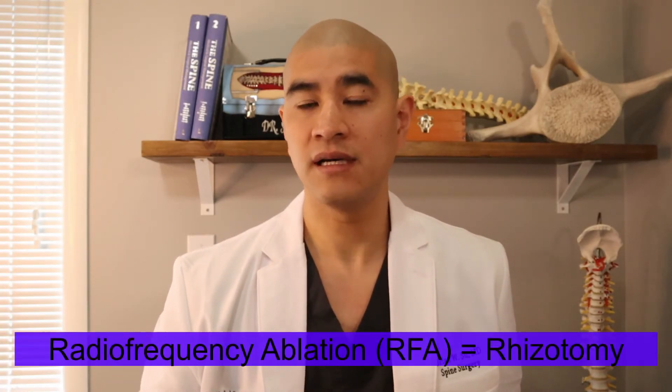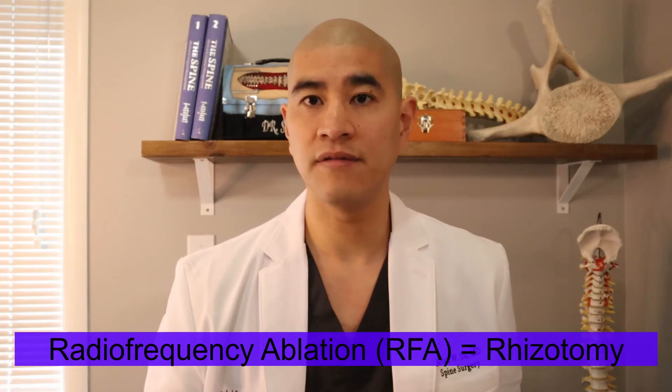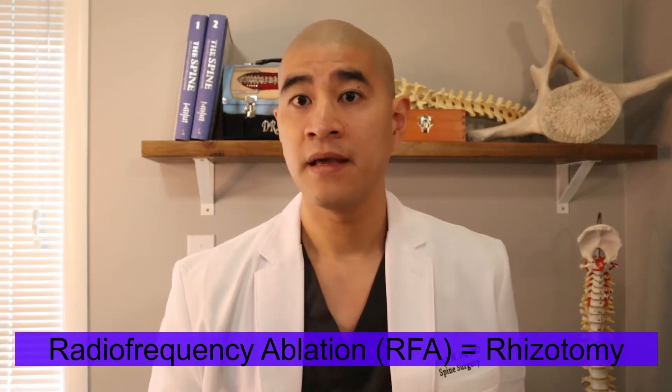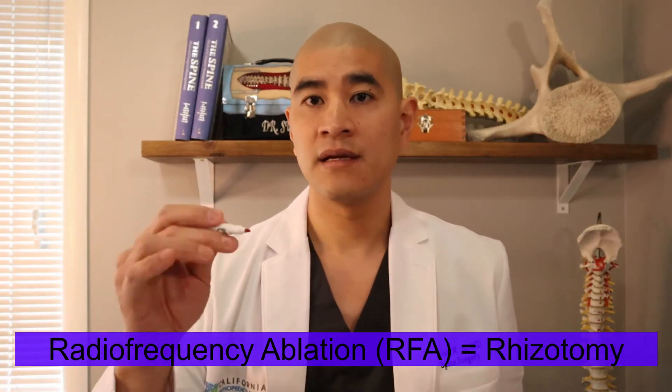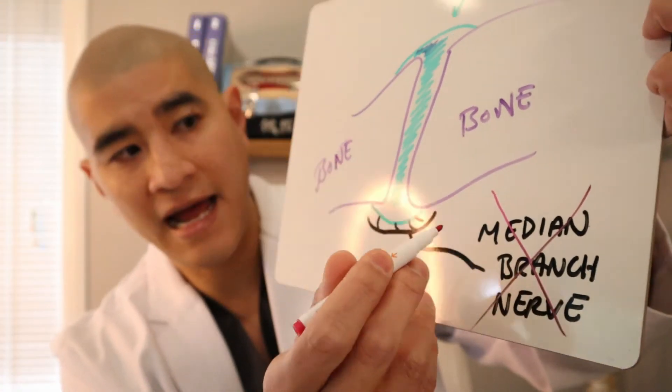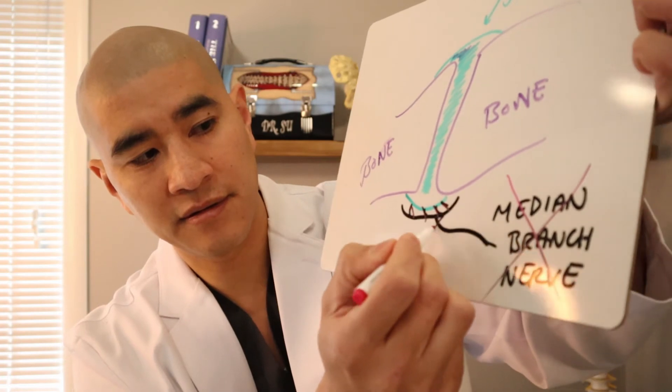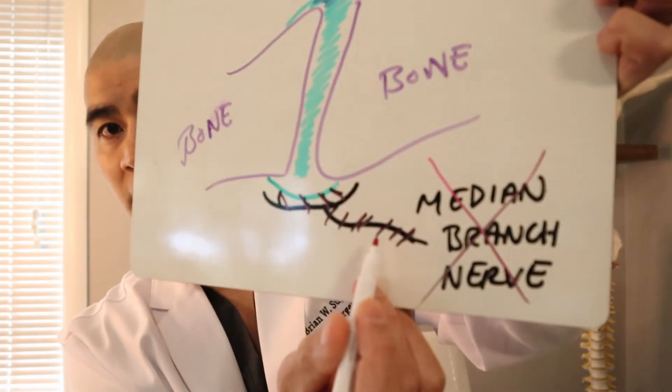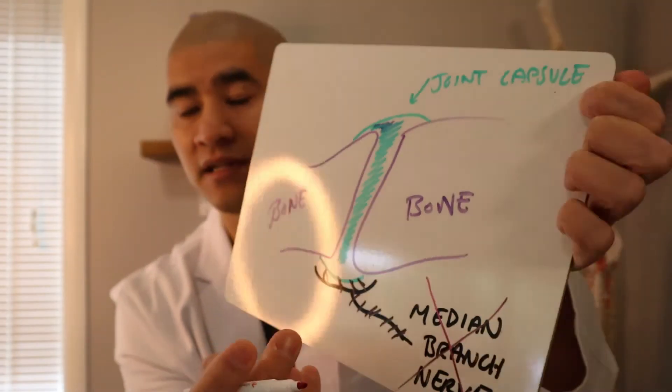After that, you can do something more permanent called a radiofrequency ablation. A radiofrequency ablation is equivalent to what's called a rhizotomy — those are the same thing. The same doctor takes not a needle but a radiofrequency probe and actually burns the nerve in order to desensitize the facet joint. This is more permanent because you're burning a nerve. This is also called an RFA, which is the same as a rhizotomy.